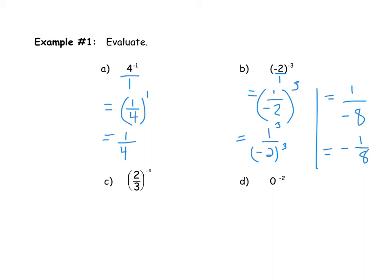Example C: two-thirds to the power of negative three. I take the reciprocal of the base, giving three-halves, which makes the exponent positive three. Then three cubed is twenty-seven and two cubed is eight, giving twenty-seven over eight. I check whether the fraction can be reduced, and in this case it cannot, so I'm done.